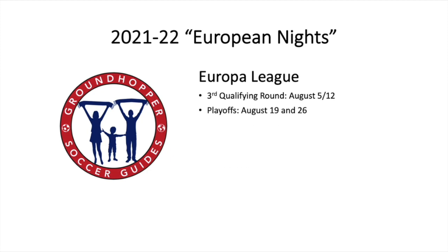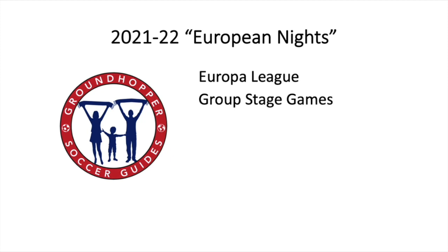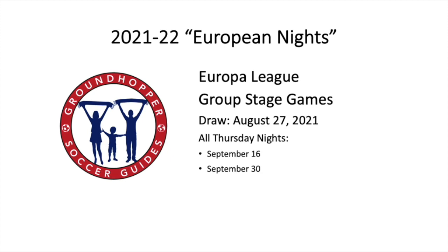Moving on to the Europa League: they also have qualifying rounds in August and a playoff round on August 19th and 26th. The English clubs Leicester City and West Ham United will not be involved in qualifying — they go straight to the group stage along with most other big-nation clubs. The Europa League group stage draw is August 27th, 2021. These are all Thursday nights and, if you're paying attention, the same weeks as the Champions League. The Thursday dates are: September 16th, September 30th, October 21st, November 4th, November 25th, and December 9th — all Thursday night Europa League group stage games.